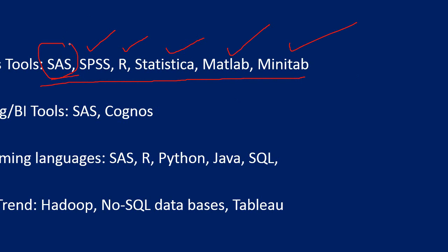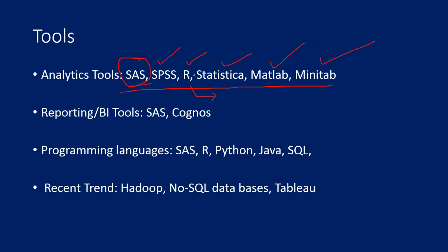But R is becoming very popular as well. SAS is a proprietary software, whereas R is a free software. That's the difference, and that's one of the reasons why R is becoming very popular — because smaller organizations cannot afford SAS.